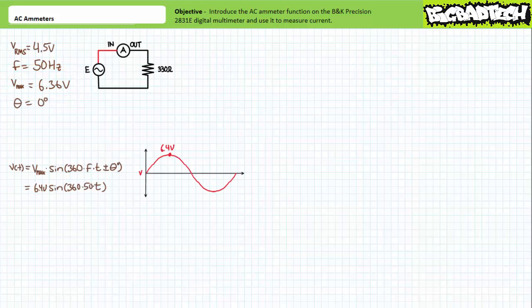If we were to assume that this is our reference waveform, we could say it has a phase shift of zero degrees. And substituting these values into the time-variant voltage formula, we arrive at V(t) = 6.4 volts times the sine of 360 times 50 times the time of interest.